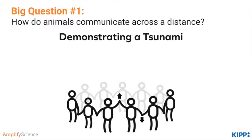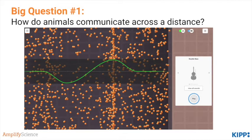Students demonstrate a tsunami by standing in a circle, holding hands, and lifting their arms up one by one in a wave pattern, in order to demonstrate that the water in a tsunami doesn't actually travel thousands of miles — the energy from the wave does instead. Each particle of water goes up and then down, similar to a person's hand, impacts the next particle, but returns to where it started. Next, students use the sound wave simulator to visualize how waves are created by pushing particles.